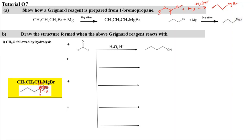For question 7B, we draw structures formed when the Grignard reagent CH₃CH₂CH₂MgBr reacts with the following. Reaction B1: reacting with methanal (CH₂O) followed by hydrolysis (H₂O under acidic conditions). MgBr is removed and replaced by attachment to the methanal carbon, adding one carbon group with OH and two hydrogens. This produces a primary alcohol with four carbons — butan-1-ol.